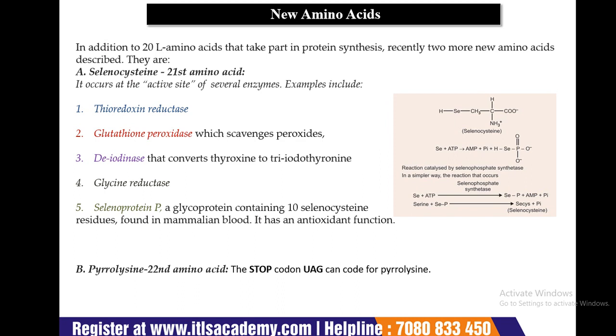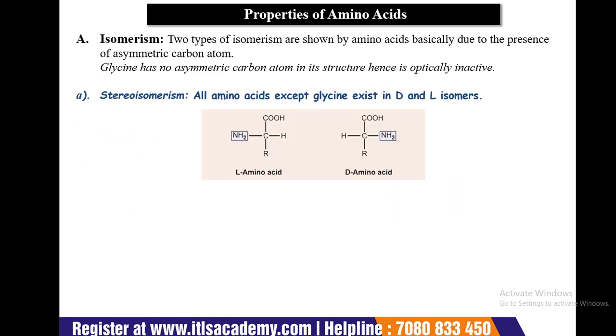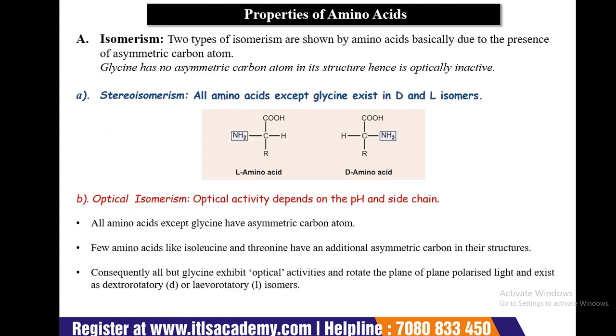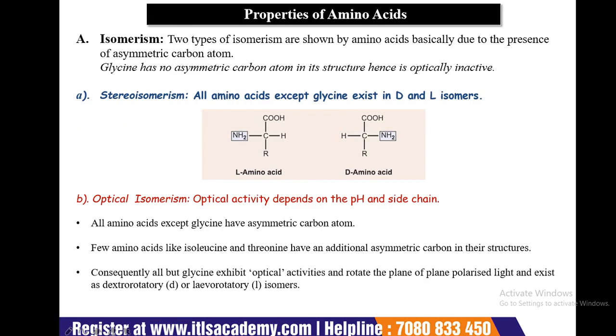The second new amino acid is pyrrolysine, the 22nd amino acid, where the stop codon UAG can code for pyrrolysine.